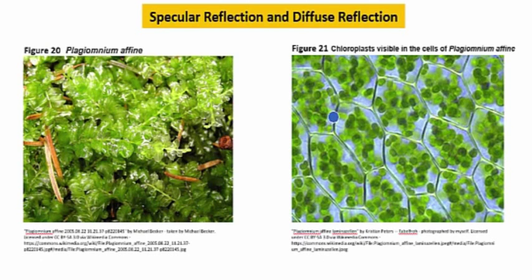The chloroplasts contain the molecule chlorophyll, which is green in plants, and it uses solar energy to produce carbohydrates from carbon dioxide and water.